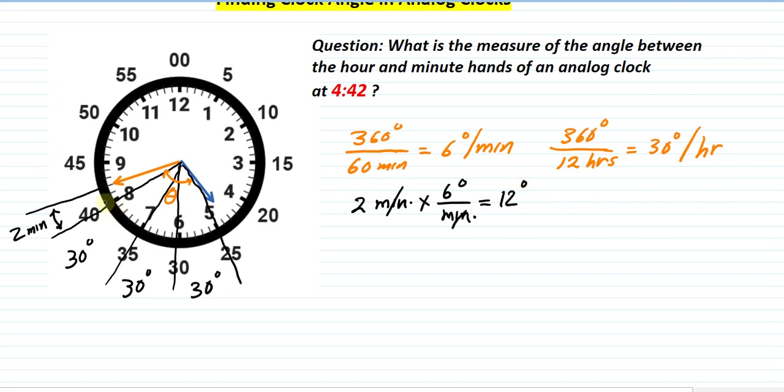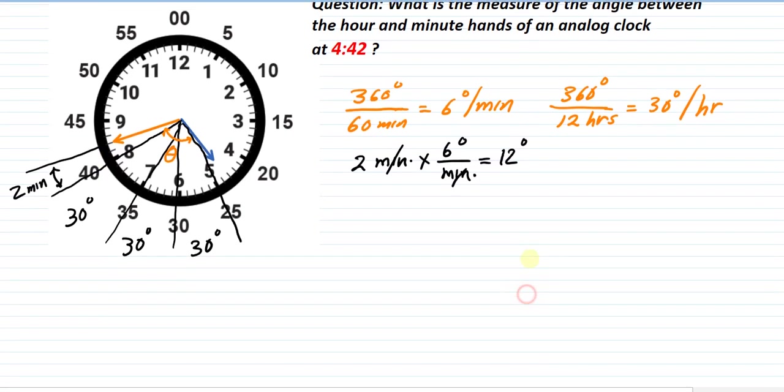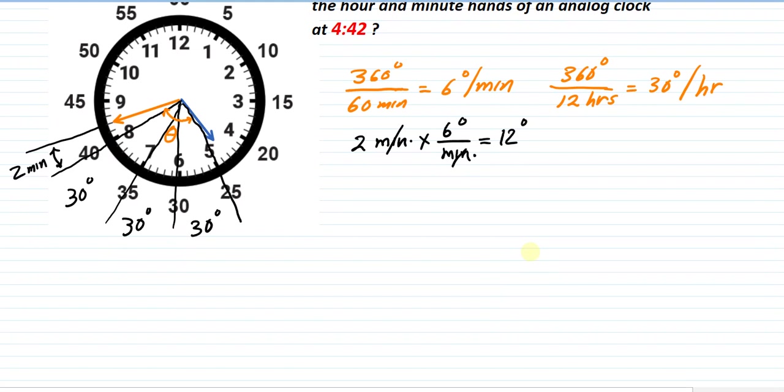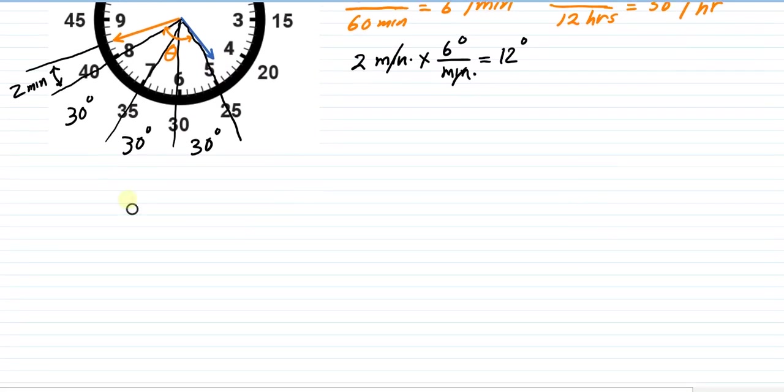Now the question that remains, which is the more challenging portion, is this: as the minute hand moves from 0 to 42, the hour hand is also moving. So it's moving—in this case it's somewhere in here—and we want to know how far the hour hand has moved away from 4 o'clock. Then we'll put it all together and have a final answer. What I'm going to do is blow up this portion of our clock. Let me paste that—I've already done that—there you go.